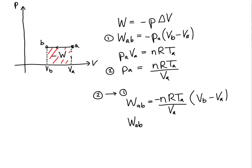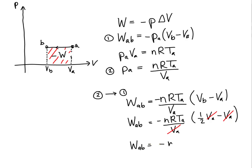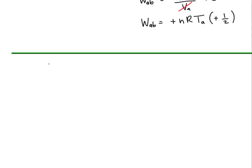To simplify algebraically, I'll rewrite V sub B as one half of V sub A. So the change in volume becomes one half V sub A minus V sub A, which equals minus one half V sub A. This lets us cancel the V sub A terms, and we get the work from A to B equals minus nRT times minus one half. A minus times a minus is a positive.